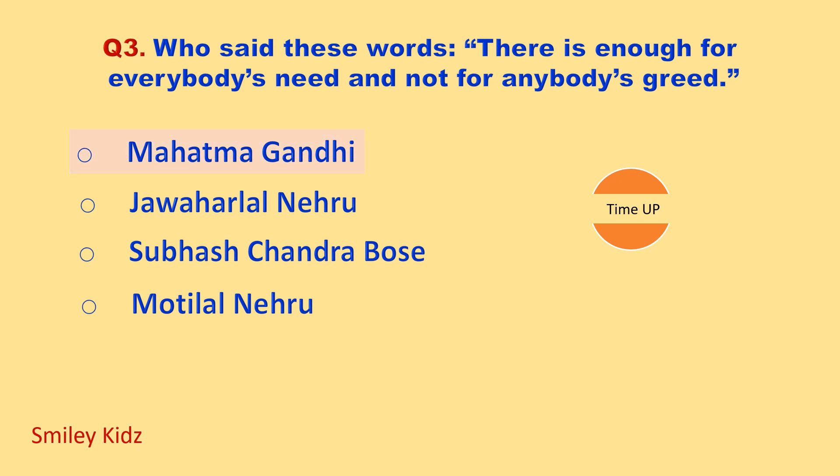Time up. The correct answer is Mahatma Gandhi. Mahatma Gandhi said these words: "There is enough for everybody's need and not for anybody's greed."